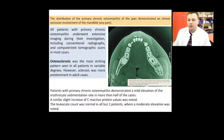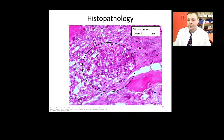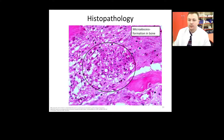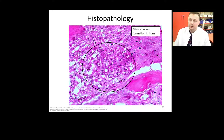In most cases osteosclerosis was the most striking pattern seen in all patients to a variable degree. Sclerosis was more predominant in adult cases. Signs of chronic inflammation with increasing bone resorption and deposition of various degrees were observed. Micro-abscess formation is a histological sign of active disease, correlating with imaging findings. Excessive bone resorption and superior bone deposition were noted more often in younger individuals and in early stages of the disease.